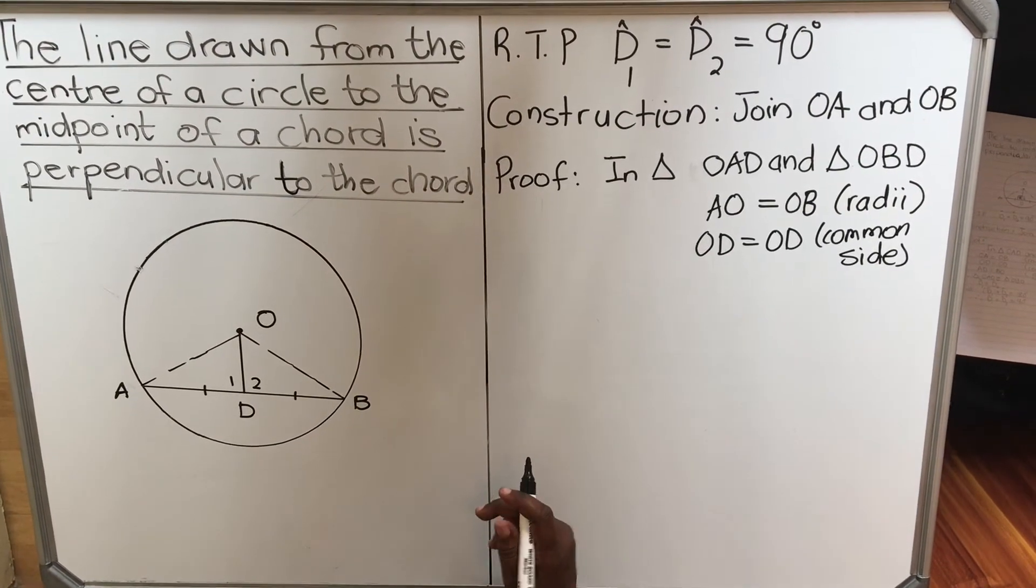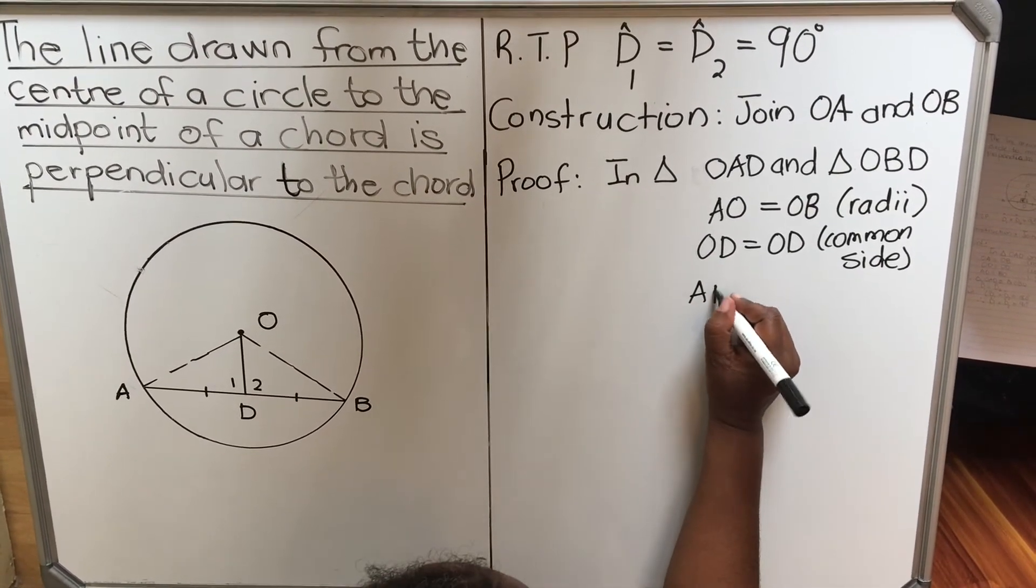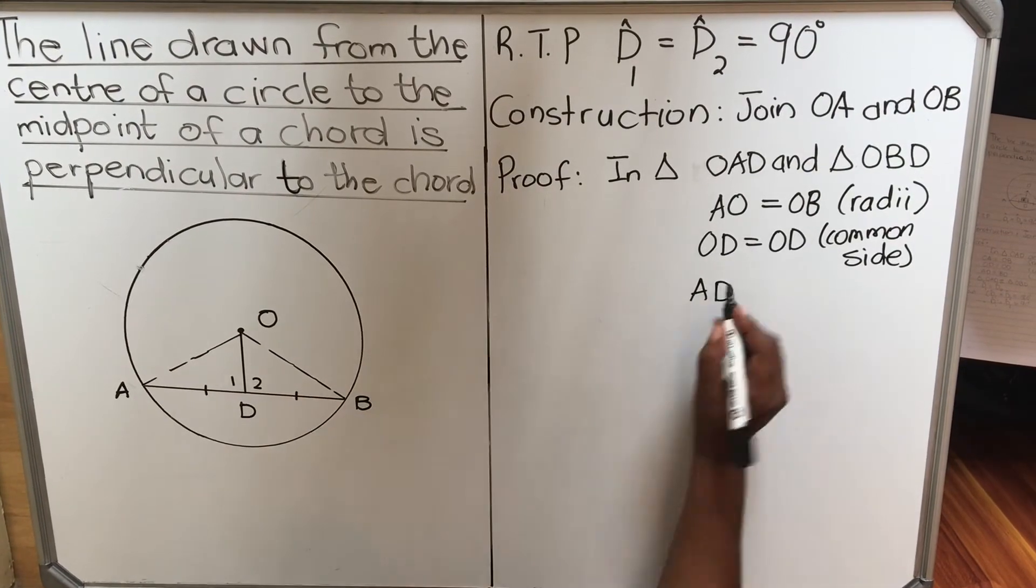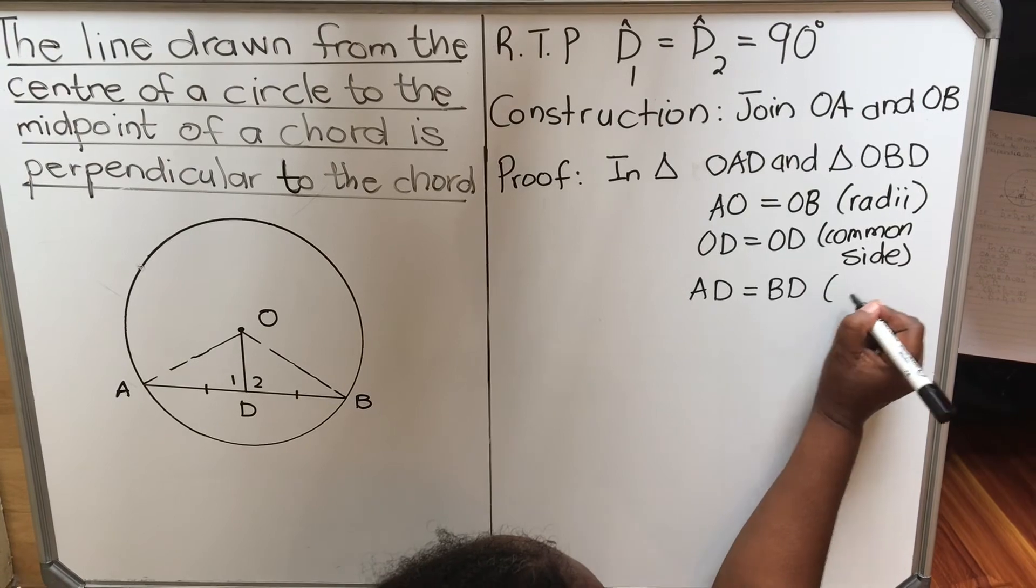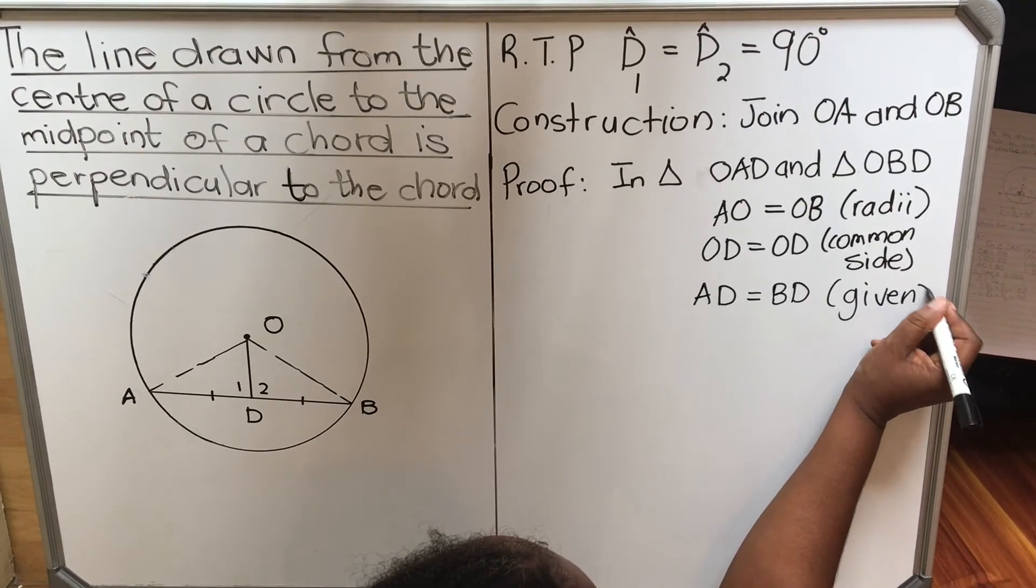And then the last one, it's AD. That line AD is equal to BD. You were given. It came with a question.